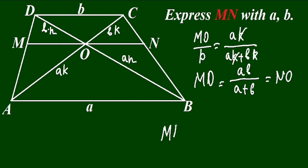MN will equal 2 times ab over a plus b. We solved this problem. Thank you for your attention. Please follow our next videos.